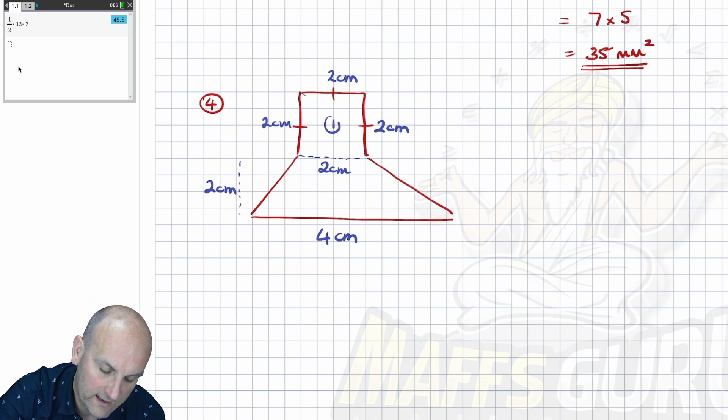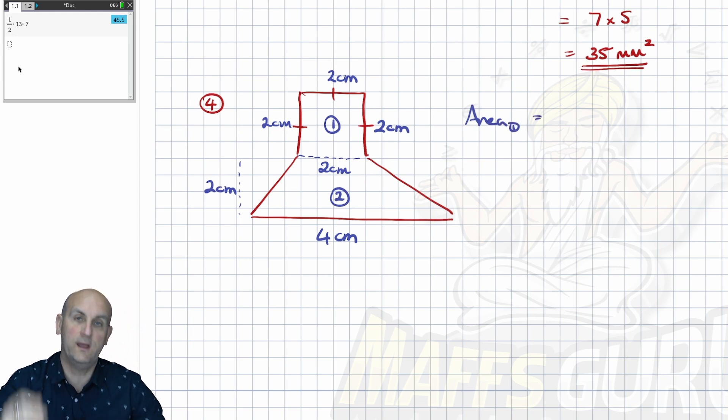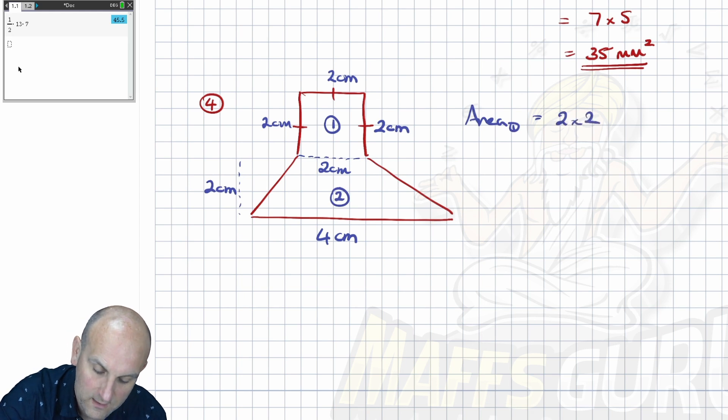So I'm going to call that area one. Let's call that area two. So area one, which is a square, is that times that. Easy peasy. So two times two, which gives me four centimeters squared.